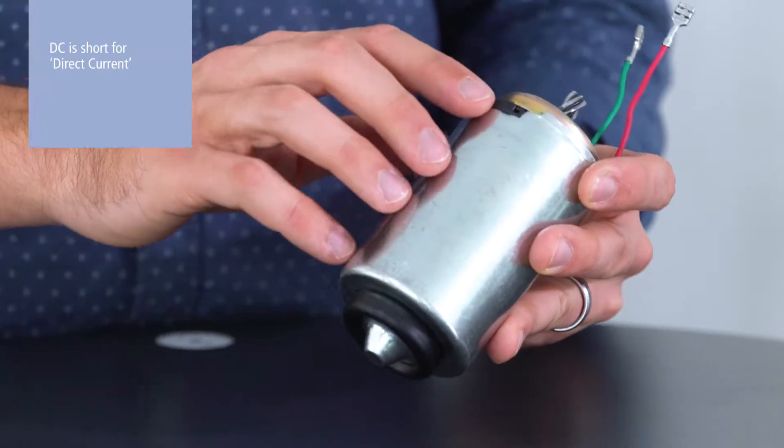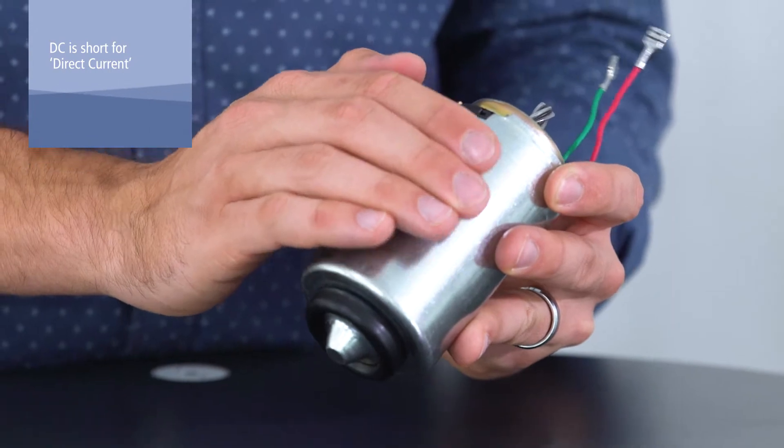A DC motor is a rotary machine that converts electrical energy into mechanical energy. Let's take a look at the components inside of a DC motor.